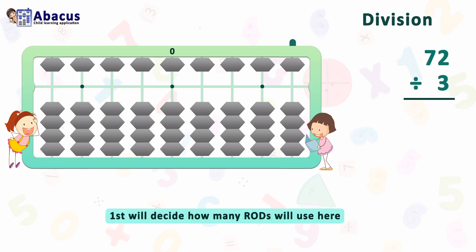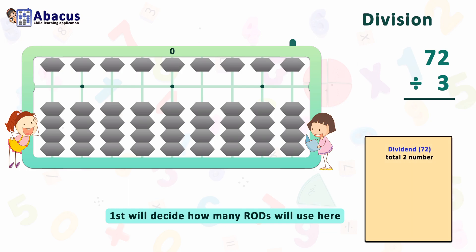Let's take the random number 72 divided by 3. First we have to decide how many total rods to use. Here the dividend 72 has two digits and divisor 3 has one digit. As per our rule: total dividend digits (2) plus total dividend digits (2) minus total divisor digits (1) equals 3. So we will use three total rods.